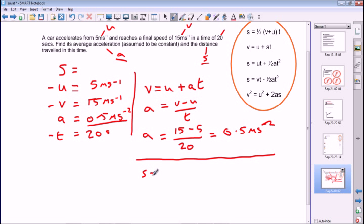s is equal to a half of v plus u times t. Sorry that's a little bit scruffy there, I hope we can understand that that's just this equation up here. We don't need to rearrange it because s is what we're looking for. So we can say s is equal to a half, and we're going to substitute the rest: 15 plus 5.